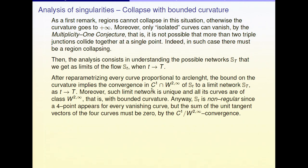Possibly re-parameterizing all the curves proportional to arc length, it is possible to show that the bound on the curvature implies some convergence in W^{2,∞} weak and in C^1 strong to some limit network S(T) as T goes to big T. The very important thing is that this convergence is not up to a sequence — all sequences of networks converge to a unique limit network. The W^{2,∞} convergence is weak, while the C^1 convergence is strong.